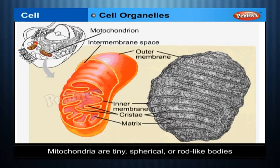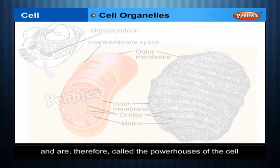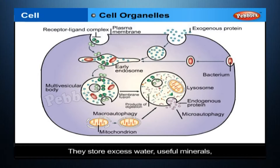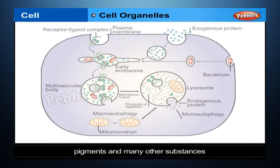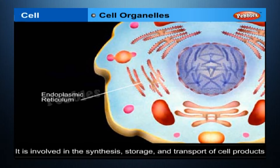Mitochondria are tiny, spherical or rod-like bodies. They act as sites of energy production and are therefore called the powerhouses of the cell. Vacuoles are fluid-filled spaces enclosed in a membrane; they store excess water, useful minerals, pigments and many other substances. Endoplasmic reticulum is a network of tubules and channels involved in the synthesis, storage and transport of cell products.